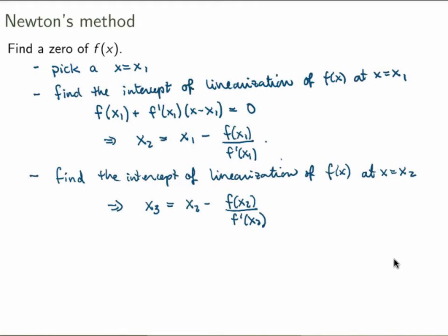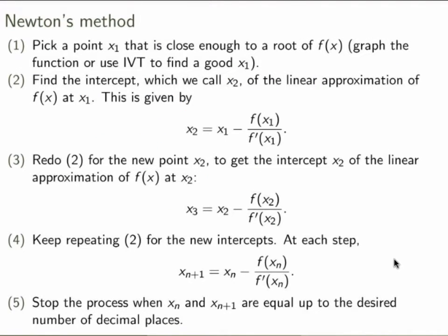Let me summarize the idea of Newton's method. You start by picking a point x₁ that is close enough to the root of f(x) — you can do that by graphing the function or using the intermediate value theorem. Then find the intercept x₂ of the linear approximation of the function at x₁, using the formula x₂ = x₁ − f(x₁)/f'(x₁). Repeat the process at x₂ to get x₃, then keep repeating. At each step, xₙ₊₁ = xₙ − f(xₙ)/f'(xₙ). You keep going until you reach the precision you want.